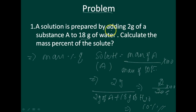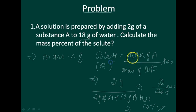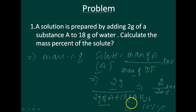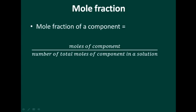So, a solution is prepared by adding 2 grams of substance A to 18 grams of water. Calculate the mass percent of the solute. Mass percentage of A equals mass of A divided by mass of solution, multiplied by 100: 2 grams divided by 20 grams, giving 10%.